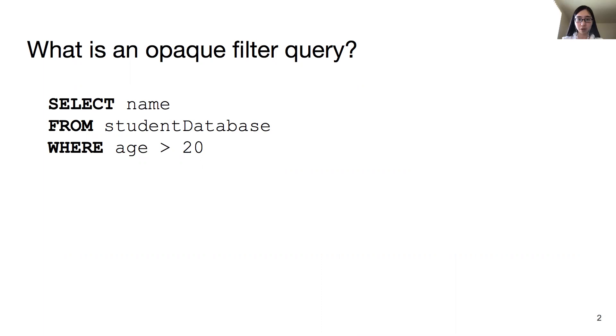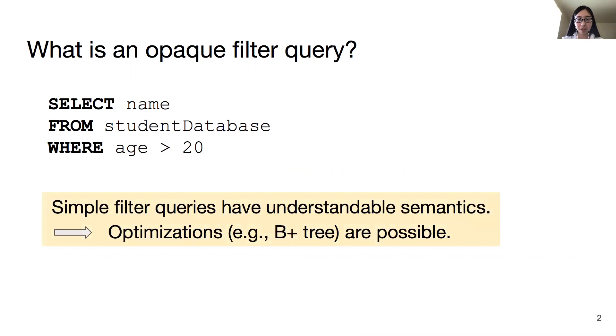An important characteristic of such queries is that their semantics can be understood by the optimizer, which then applies appropriate optimizations such as B+ trees.